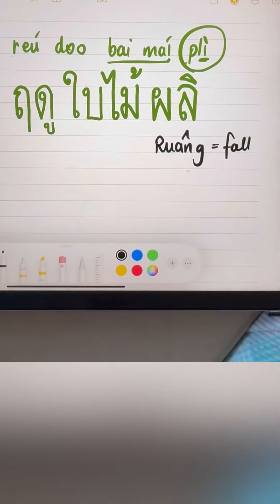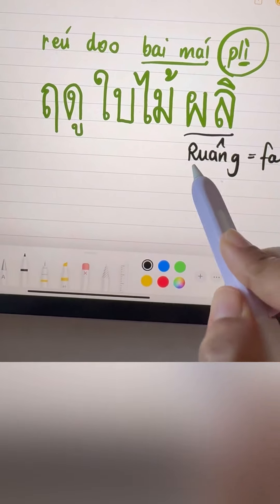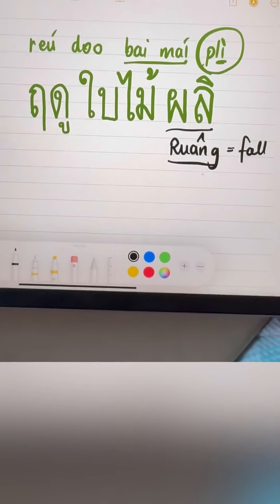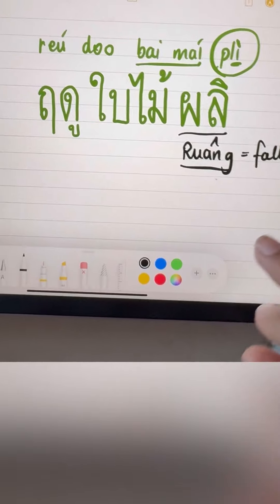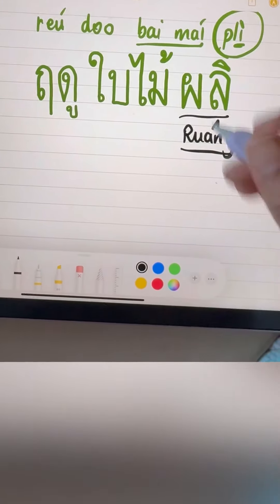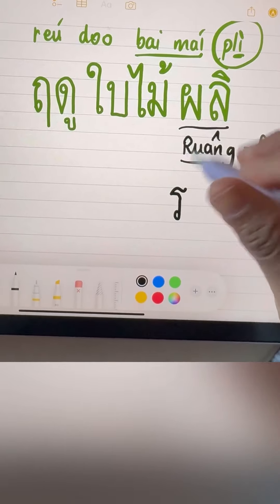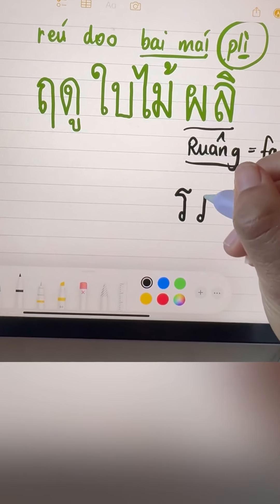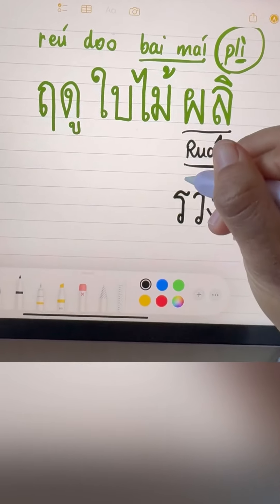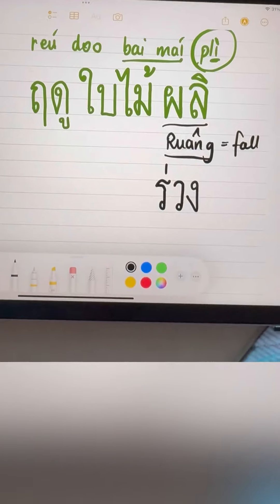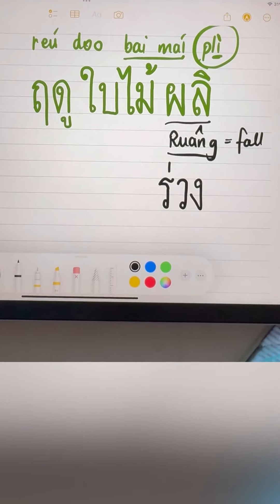For the word autumn or fall, we just change the word PY to RUANG, everything the same. RUDU BAI MAI RUANG. RUANG, it means fall down. So we're gonna use RORU, SALA AI MAI, which is this one, same as WOWEN. NGONGU, SALA, NG, and then MAI E, RUANG. RUDU BAI MAI RUANG, autumn or fall.